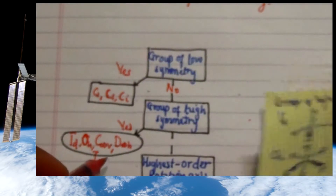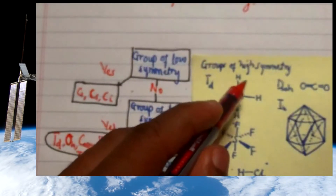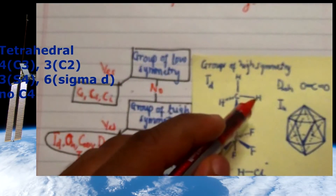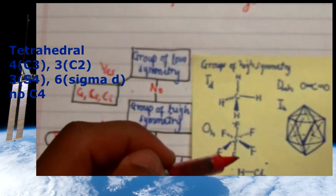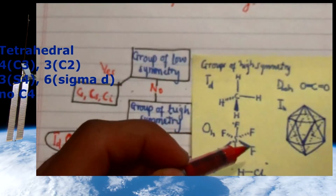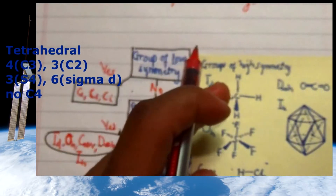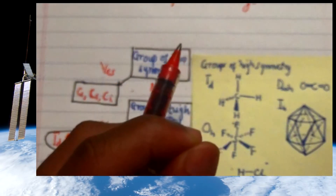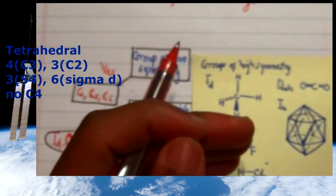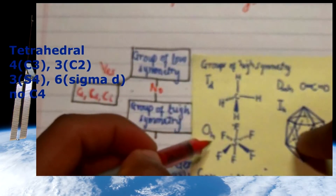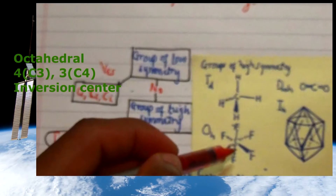An example for high symmetry elements: a tetrahedral molecule where all terminal atoms are identical has four C3 axes and three C2 axes. It also has three S4 axes, which are the combination of a C4 and a mirror plane perpendicular to the C4, and six sigma-d dihedral planes between two bonds — however, Td does not have a C4 axis. The other example is an octahedral molecule, which has four C3 axes and three C4 axes.